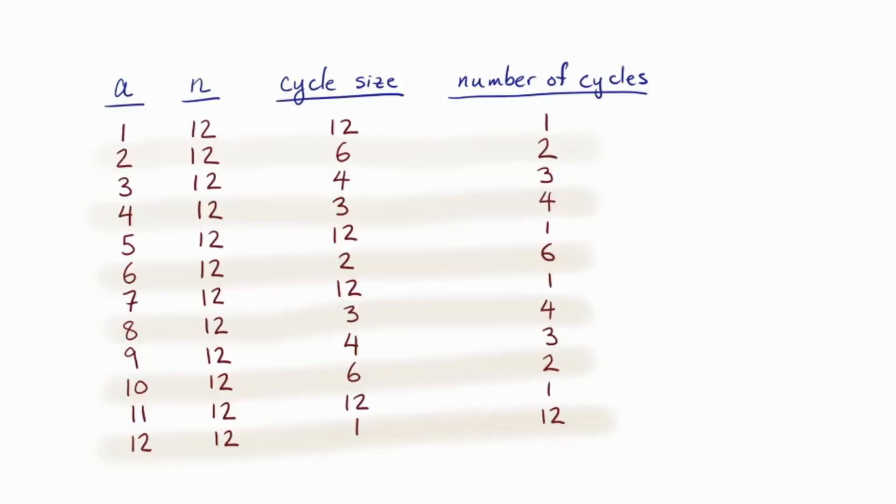Okay, let's go back to our data. Let's tabulate the data from the examples we were looking at and a few more. It might be easier to see some patterns when it's displayed this way. So here's a table showing a, n, the cycle size, and the number of cycles. Can you guess the pattern? Can you see it? Let's see what we can notice.